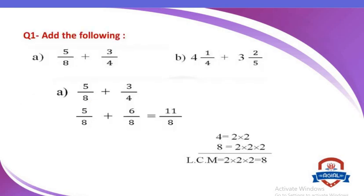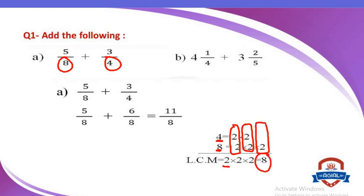Let's see an example. Question number 1: add the following — 5 over 8 plus 3 over 4. The two fractions have different denominators: 8 and 4. So first, the rule says find the LCM for the denominators. I have 4 and 8. 4 equals 2 times 2. 8 equals 2 times 2 times 2. So the LCM for 4 and 8 equals 2 times 2 times 2, which is 8. So my new denominator will be 8.